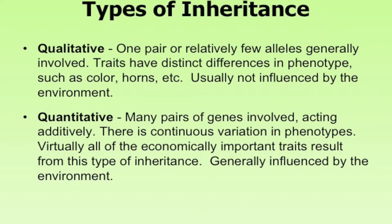There are also two types of inheritance: qualitative, involving one or relatively few pairs of alleles, where traits have distinct differences in phenotype such as horns or color, and are usually not influenced by the environment — whether an animal is red or black is not influenced by environmental effects after birth; and quantitative, where many pairs of genes are involved acting additively, producing continuous variation in phenotype. Virtually all economically important traits result from quantitative inheritance, and these can be influenced by the environment — even cloned animals will perform differently if fed differently.